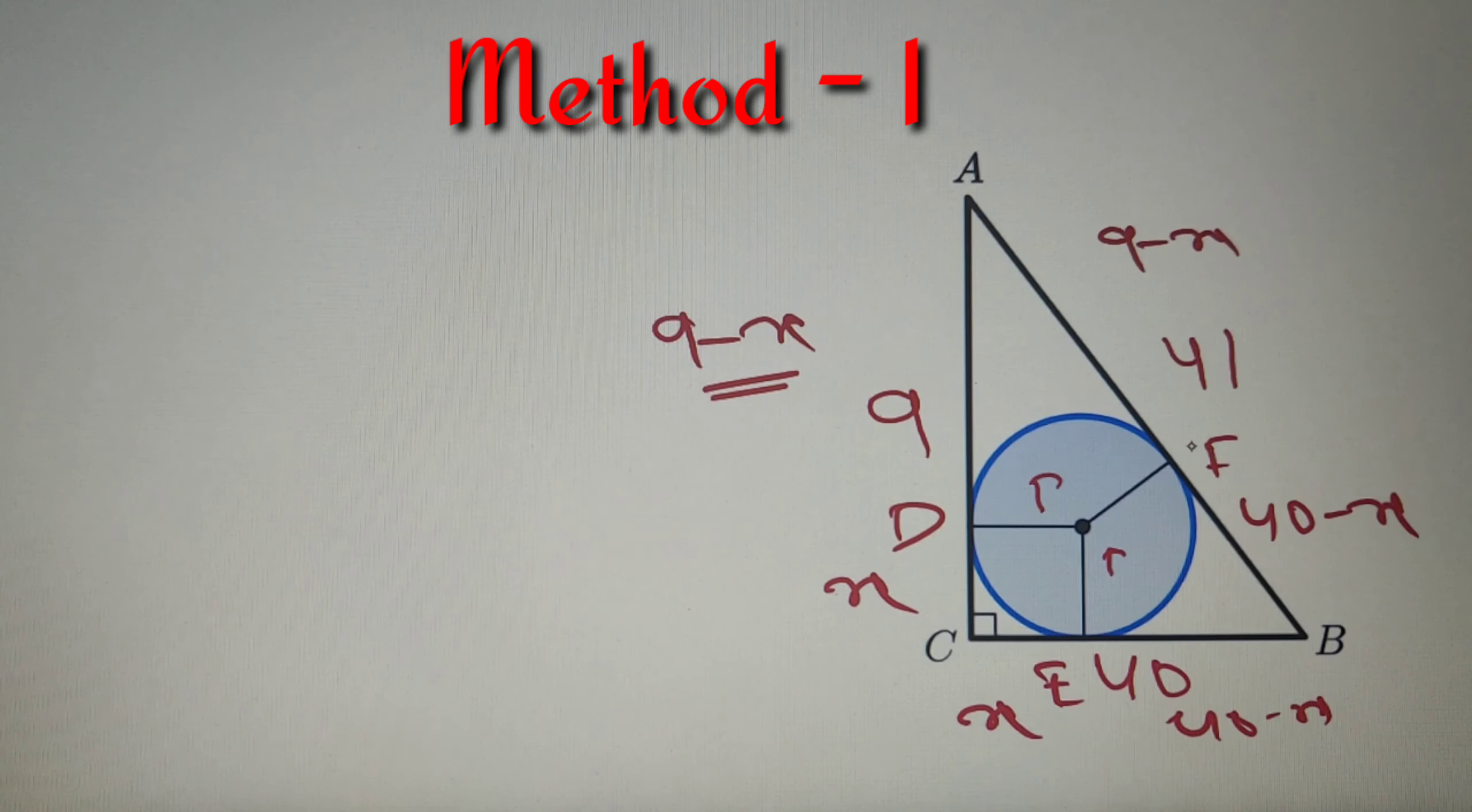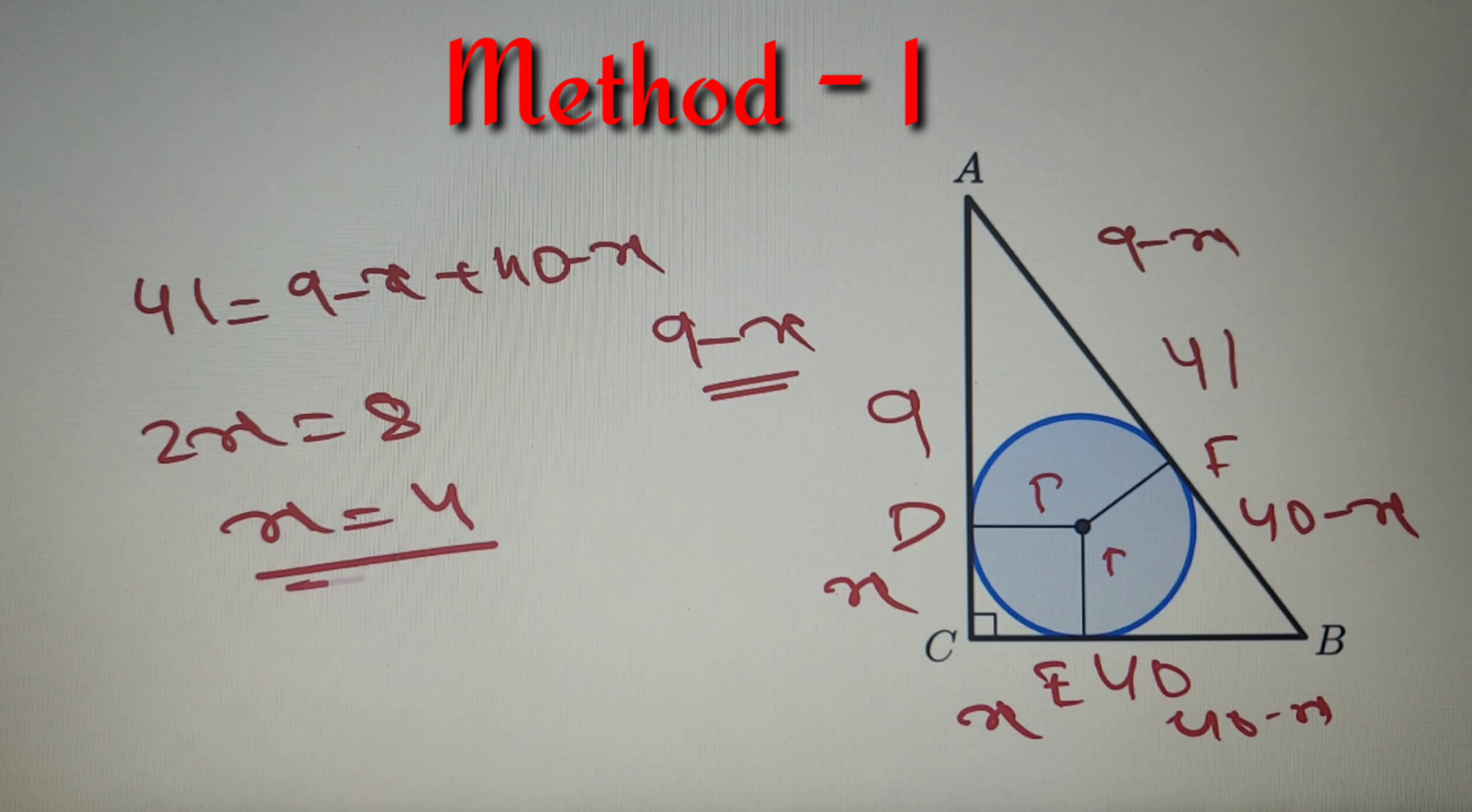Now I've got that AF is equal to 9 minus X and BF is equal to 40 minus X. So I can say that the value 41 is equal to 9 minus X plus 40 minus X. So from here, I will get that 2X is equal to 8 and the value of X is equal to 4. Now since the value of X is equal to the value of the in-radius, I can say that the value of in-radius is equal to 4 centimeter.